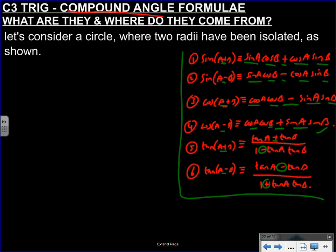So those are your six addition or compound angle formulae. Where do they come from? Well, we can do this quite quickly. Let's prove number 4: cos(A-B). That's the easiest one.